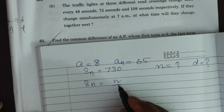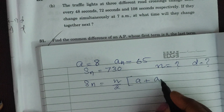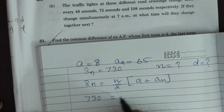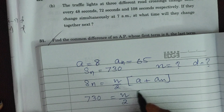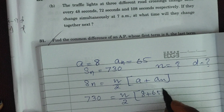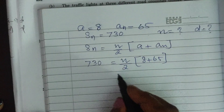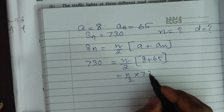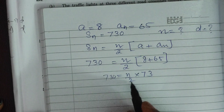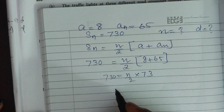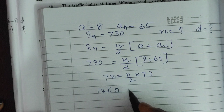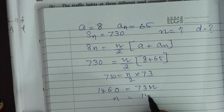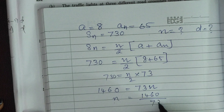Using the formula Sn = n/2 × (a + an): 730 = n/2 × (8 + 65) = n/2 × 73. Cross-multiplying: 1460 = 73n. So n = 1460 ÷ 73 = 20.